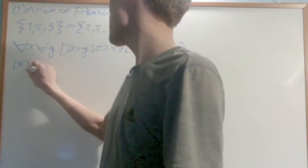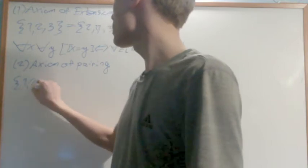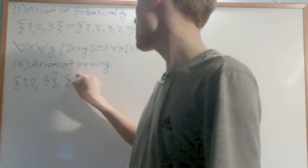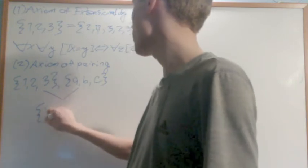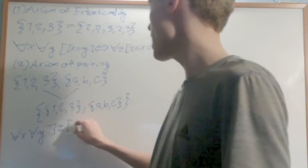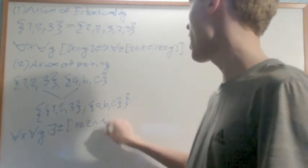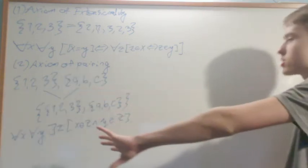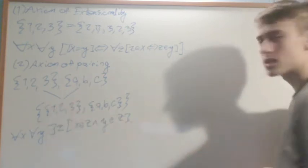The second one is the axiom of pairing. It says that if I'm given a set, say {1, 2, 3}, and another set, say {A, B, C}, there is another set that I can create out of these two that just contains both of them. The exact statement is that for any set x and for any set y, there exists z such that x is an element of z and y is an element of z. That just says that for any two sets, I can put them inside of a set.